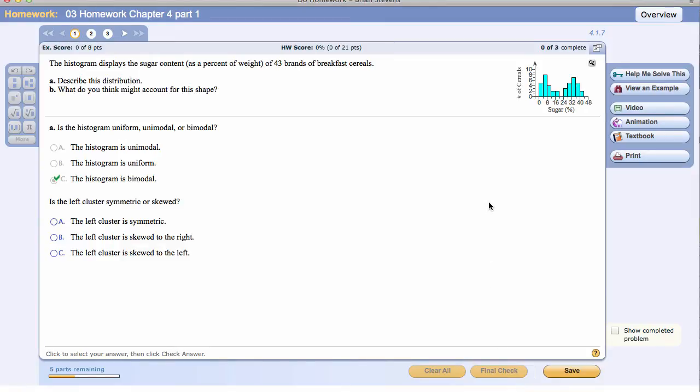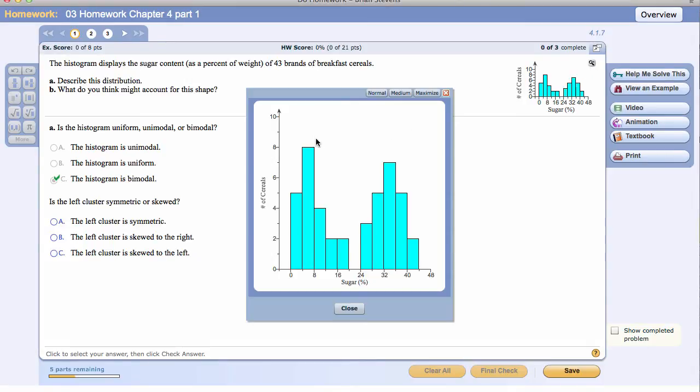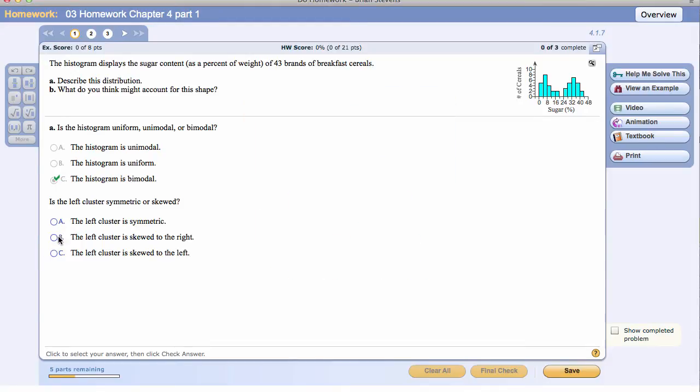Next, is the left cluster symmetric or skewed? When we talk about skew, it's which way is it pulled out? And this is often denoted by the tail. Looking in here at the left cluster, you will see that the tail is pulled to the right. Imagine you've taken this histogram and pulled it out in one direction. This has been pulled out to the right so it has a right skew.